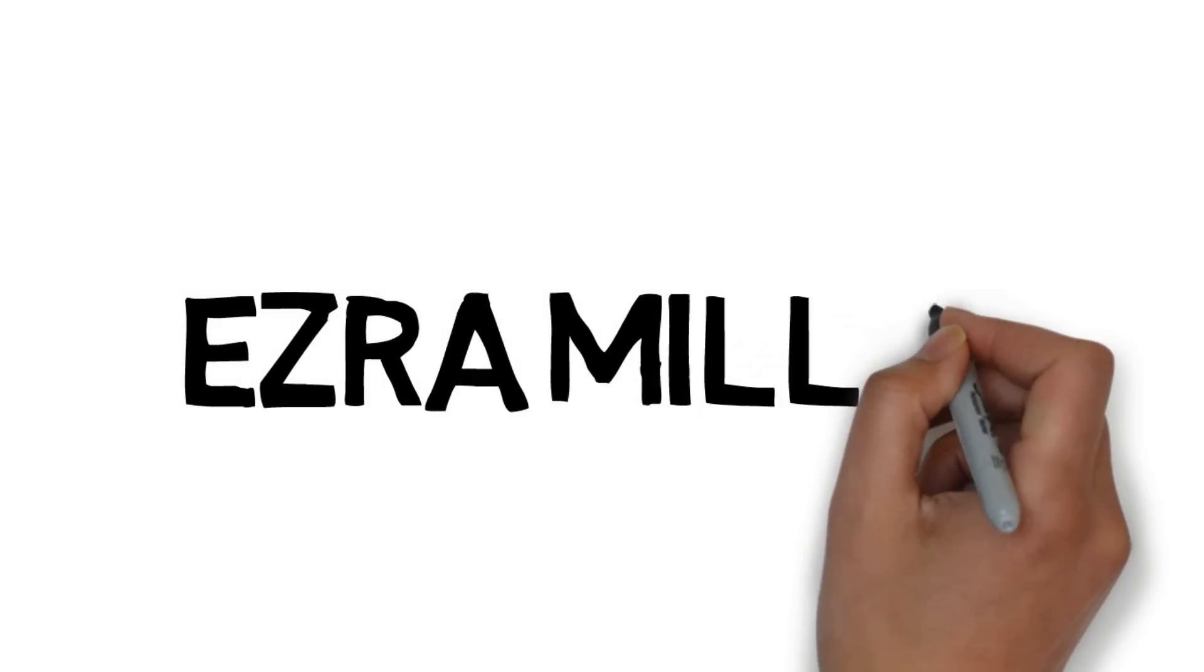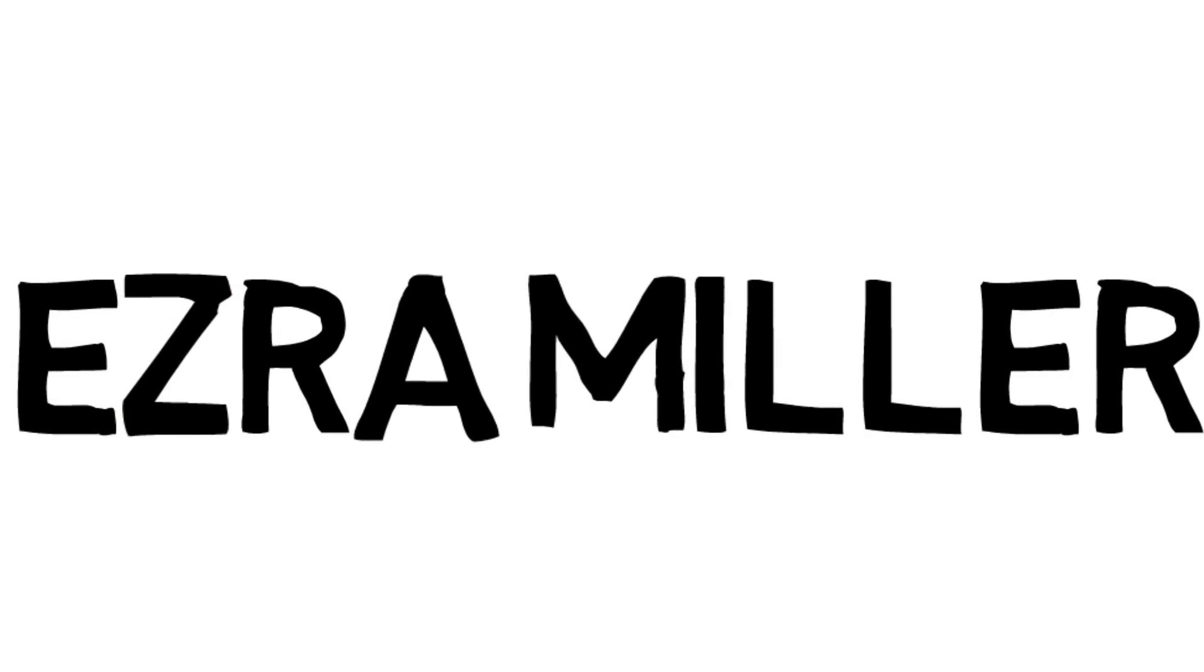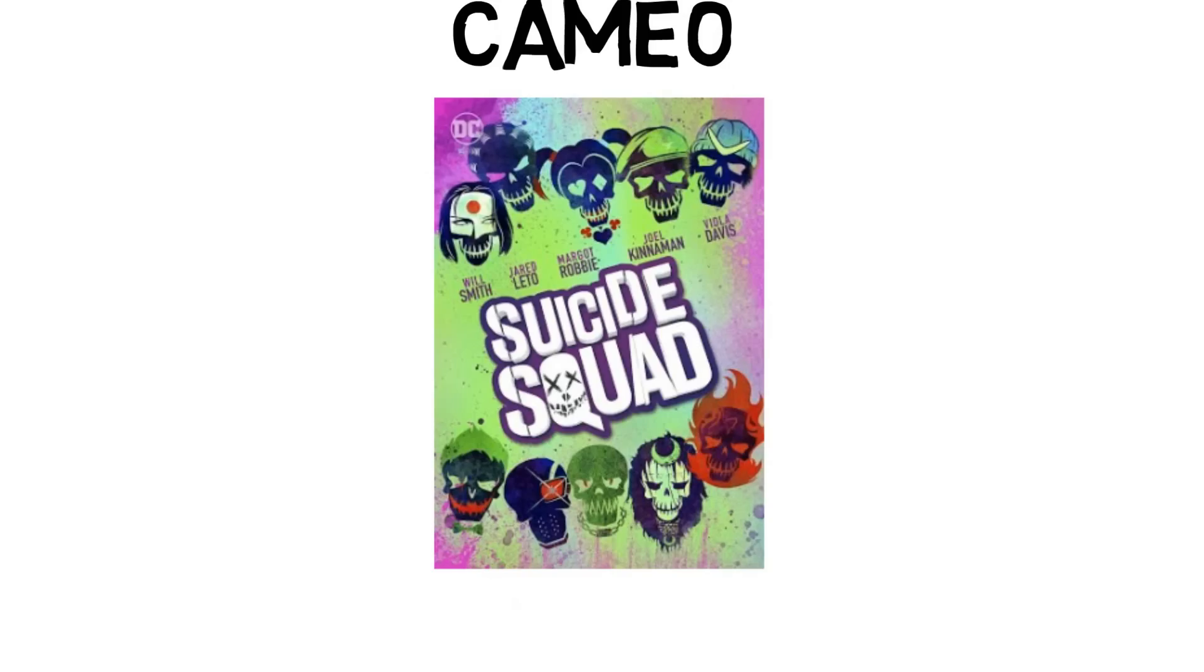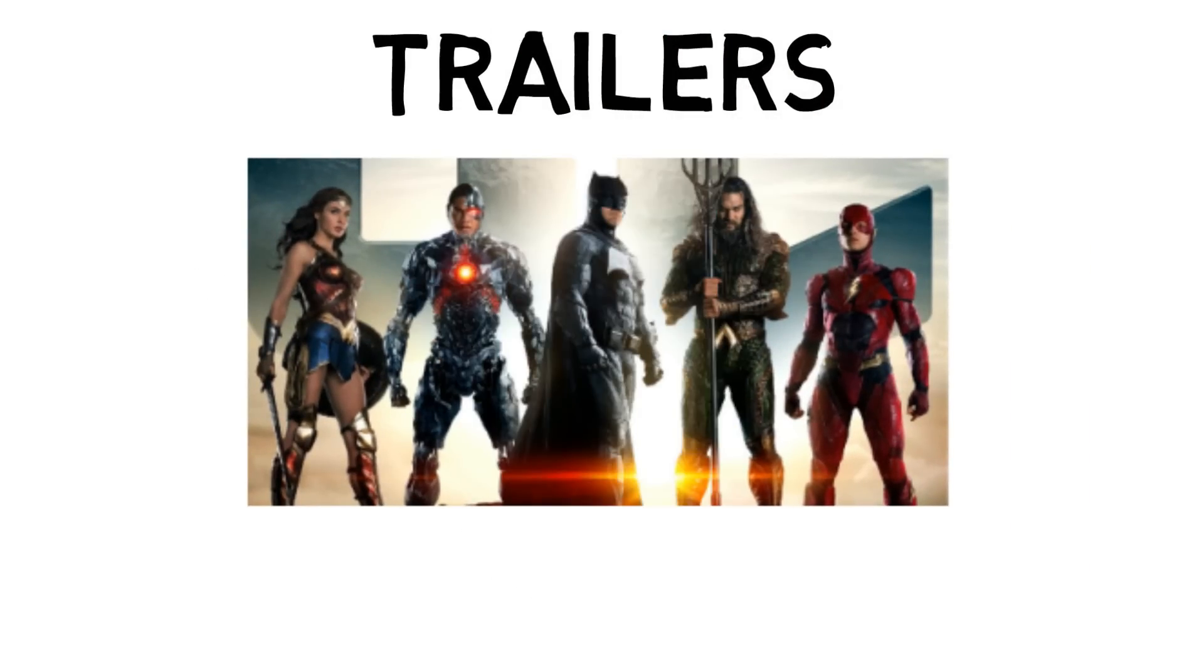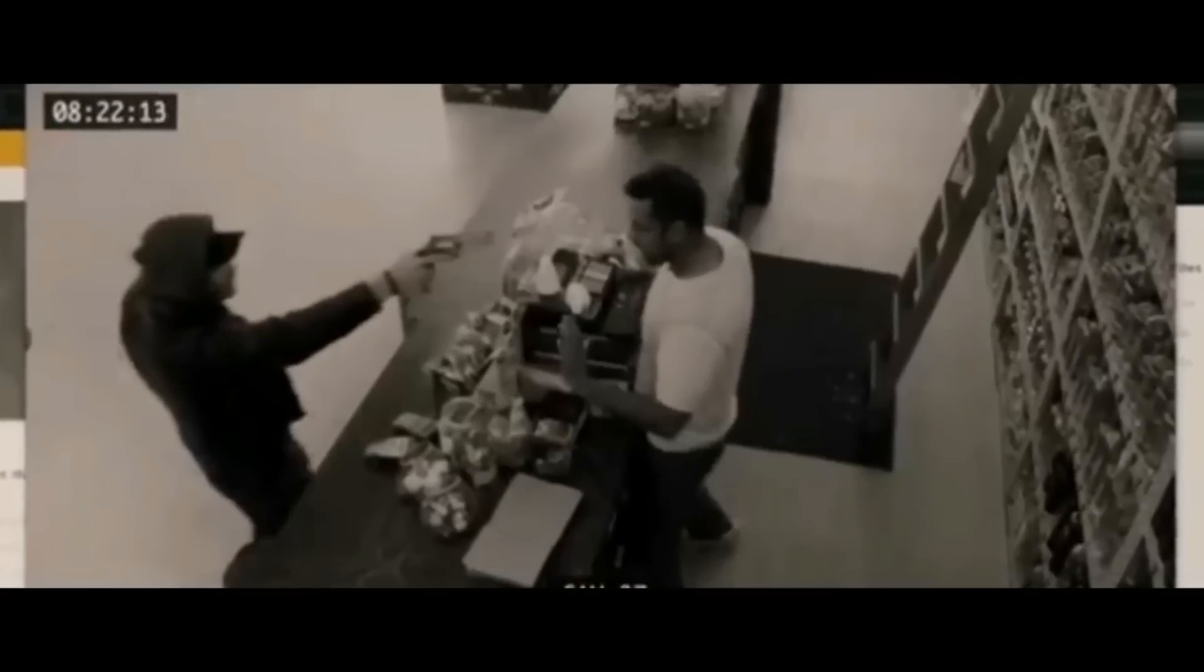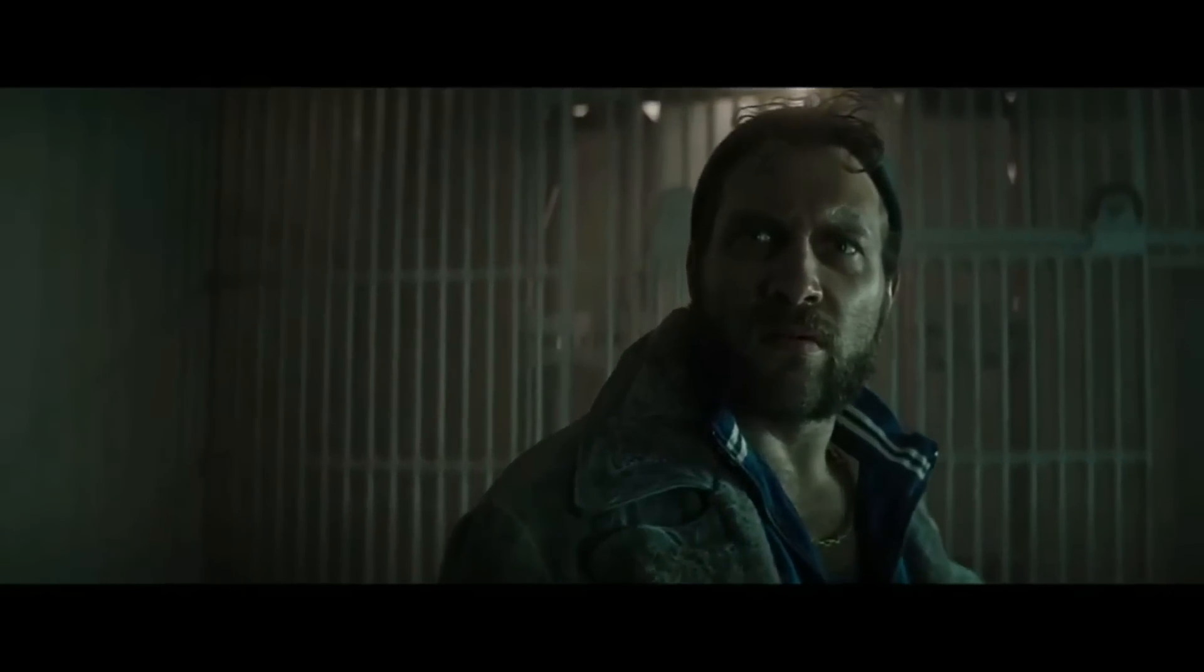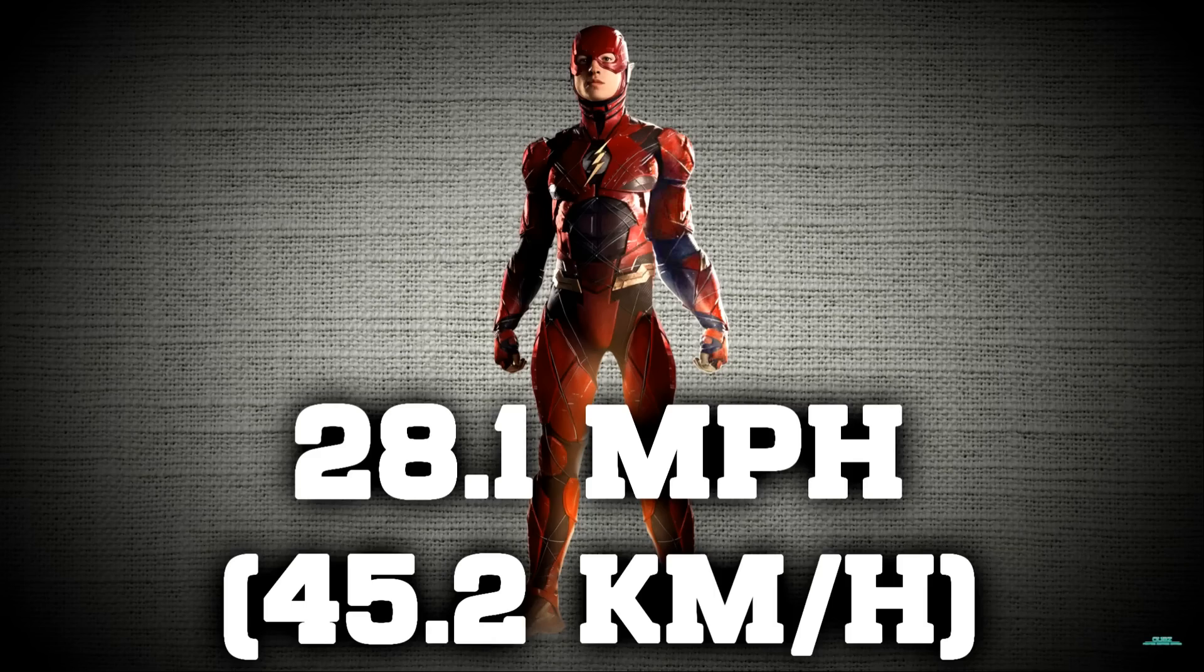Now we're going to be solving for DCEU Flash, or Ezra Miller Flash. We haven't seen very much of this Flash except for his brief cameo in Suicide Squad, as well as his brief appearances in the trailers for the Justice League movie. And we can't use this scene because this scene pretty much failed. And we can't use this scene because Gubbs already calculated that he would only be moving at 28.1 miles per hour.